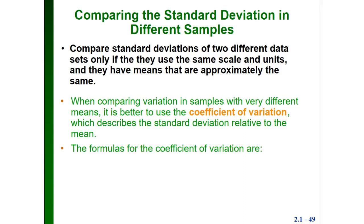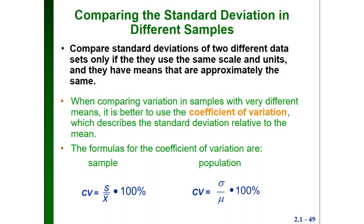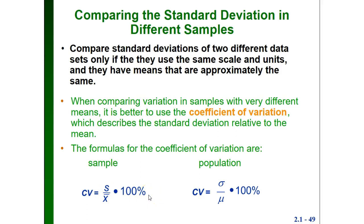The coefficient of variation describes the standard deviation relative to the mean. There are two formulas — one for a sample, one for a population. For a sample, we take the sample standard deviation s divided by the sample mean x-bar; for a population, we take sigma divided by mu. In either case, we multiply the result by 100%, so the coefficient of variation is expressed as a percentage.